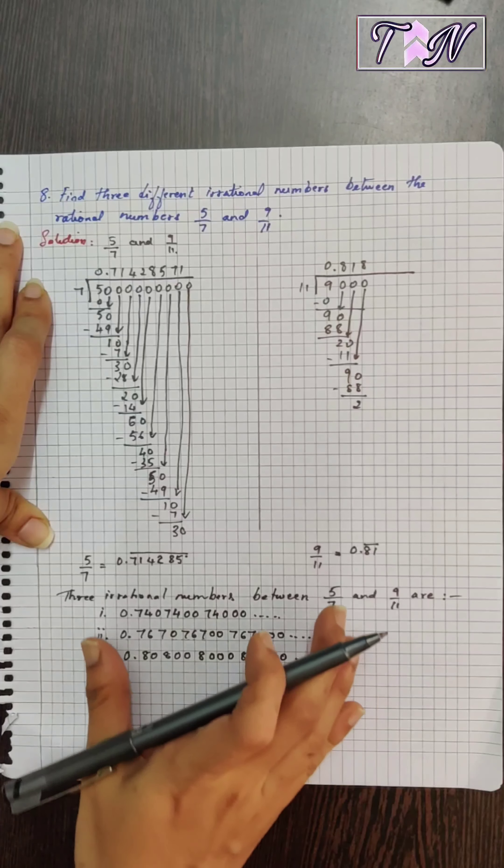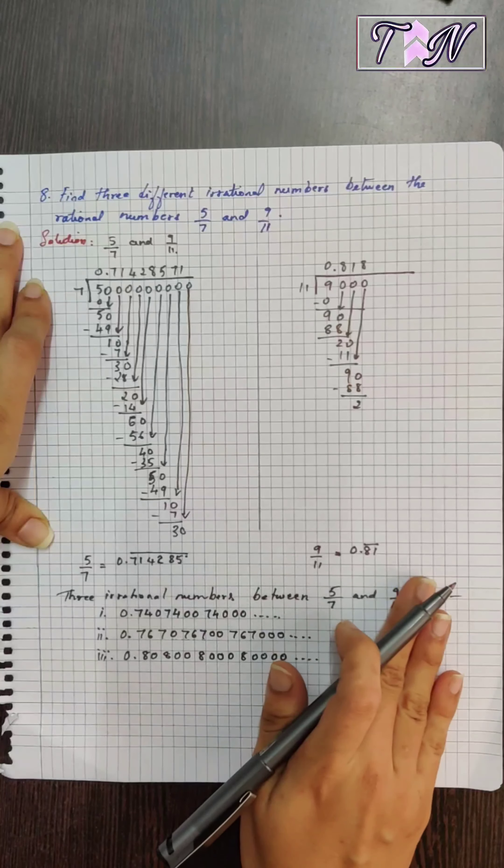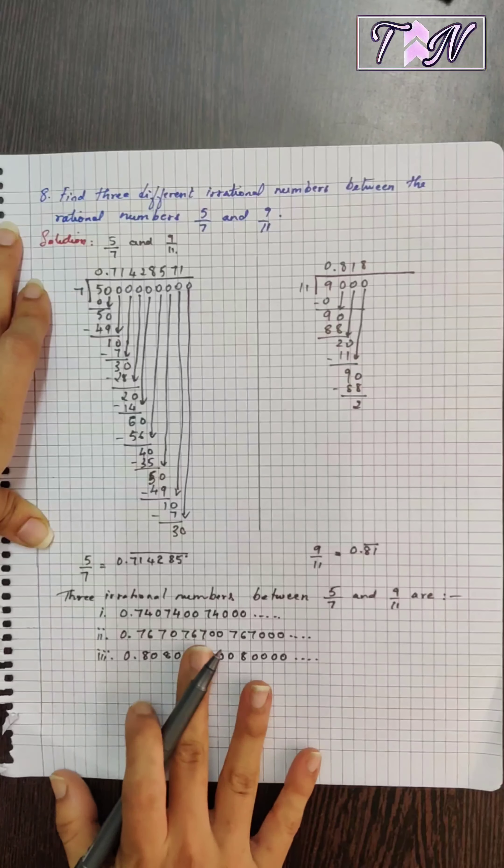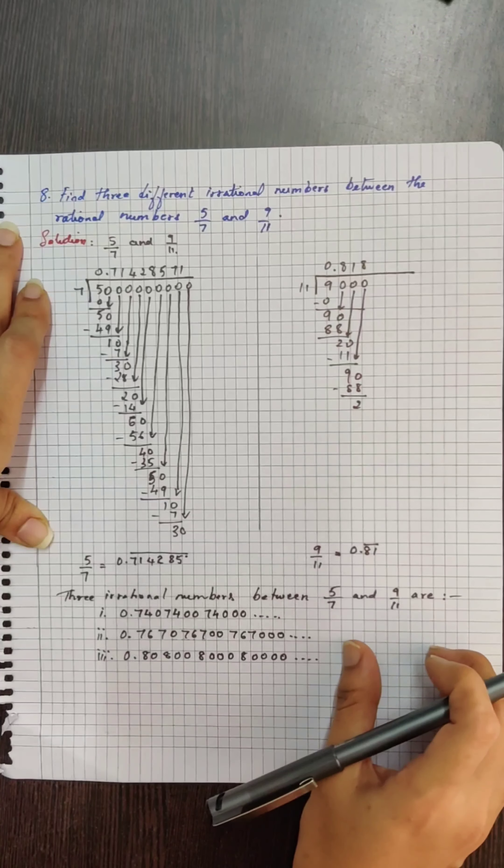So you can write any three numbers of this form which lies between these two decimal expansions. So this is how we write the irrational numbers between given two rational numbers.